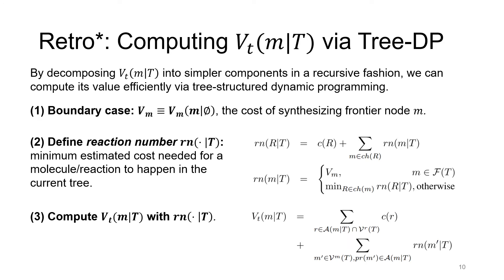Once we have all the reaction numbers, we can compute Vt(m|T) by summing over the cost of all the ancestor reactions, and the reaction number of all the sibling molecules in all levels of the search tree.